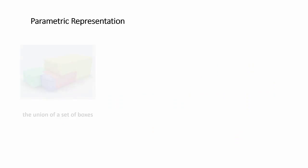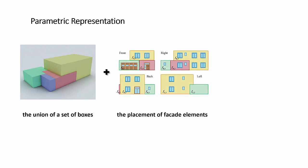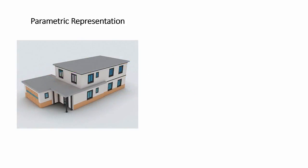We present a building as a union of a set of boxes and the placement of facade elements and roof information. The problem of this representation is that each building has a different number of parameters.